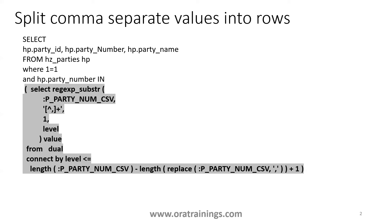So the logic here is we are splitting the provided input values, which are comma separated, into multiple levels of records. That's why the IN clause will work perfectly, considering the list of values as individual records and we'll get the result. The core logic is available in this highlighted query.